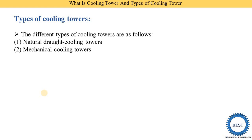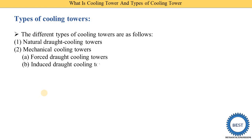The second type is the mechanical cooling tower. In a mechanical cooling tower, we use a fan for the circulation of air. Within mechanical cooling towers, there are two sub-types: the first is the forced draft cooling tower and the second is the induced draft cooling tower.